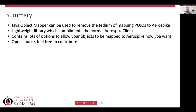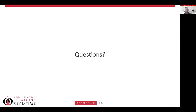The Java Object Mapper is very powerful. It runs very close to the Aerospike client but is lightweight, sitting on top of it. There are lots of options for how to map your objects onto Aerospike. It's an open-source library — feel free to contribute, give comments or recommendations, or raise any issues. Thank you for listening and please stay on for the Q&A session.